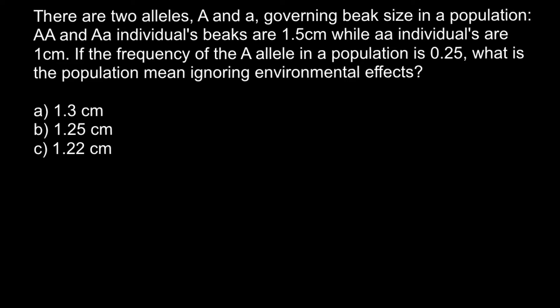There are two alleles: dominant allele A and recessive allele a, governing beak size in a population. Homozygous dominant and heterozygous individuals' beaks are 1.5 centimeters, while homozygous recessive individuals are 1 centimeter. If the frequency of the dominant allele in the population is 0.25, what is the population mean, ignoring environmental effects?